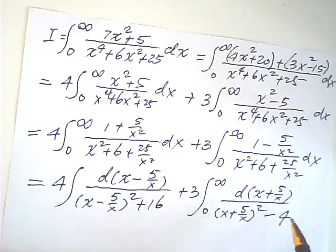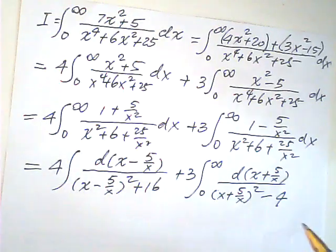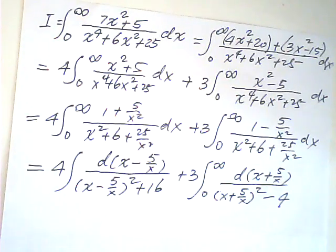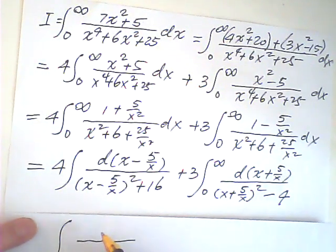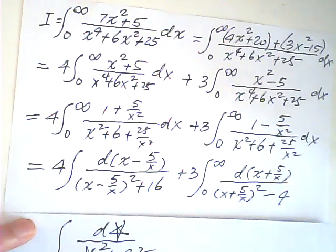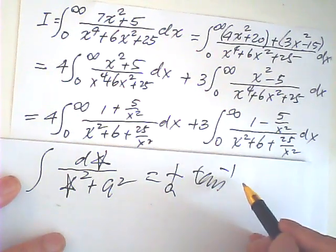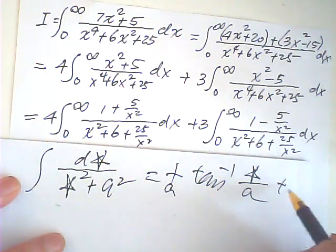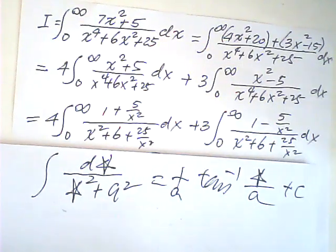The technique in integration is change the integral function at the same time while maintaining the equal sign. So, this one, I can use the formula. We have a basic formula: d star over star squared plus a squared. This one is equal to 1 over a, arctangent, star over a.